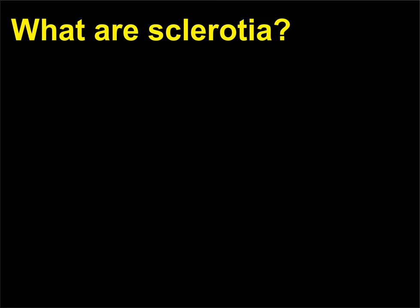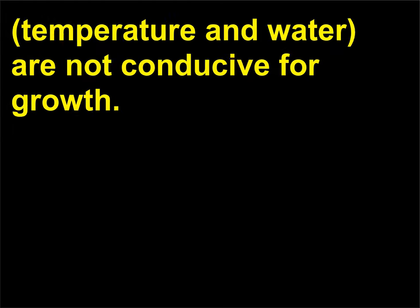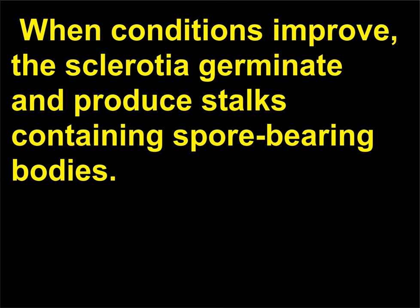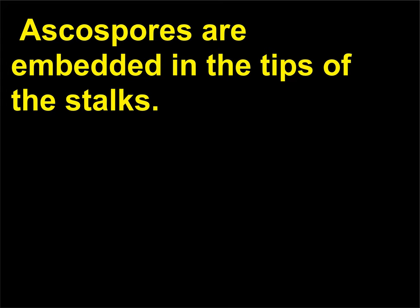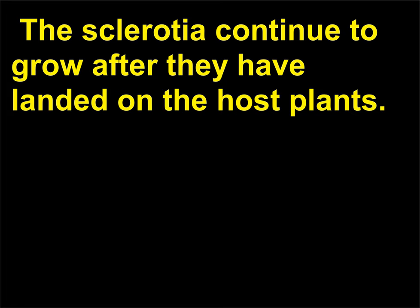What are sclerotia? Sclerotia are the aggregate of hyphae enclosed in thick walls that form a protective covering when conditions — temperature and water — are not conducive for growth. When conditions improve, the sclerotia germinate and produce stalks containing spore-bearing bodies. Asco spores are embedded in the tips of the stalks. When transported by wind, asco spores may land on grasses or grains, especially rye. The sclerotia continue to grow after they have landed on the host plants.